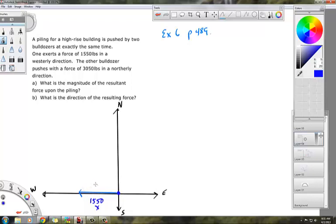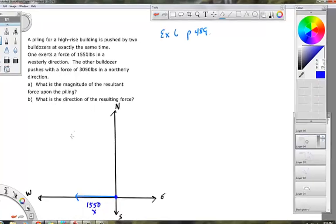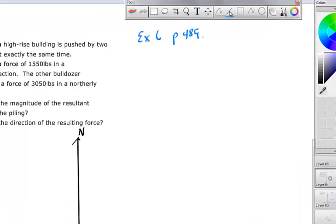It's also being pushed north by another bulldozer at 3,050 pounds in a northerly direction. So using what we talked about yesterday, which is the triangle method, we're going to basically build our vector and sort of to scale here a little bit.